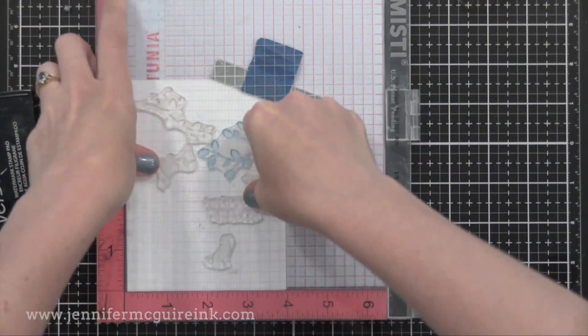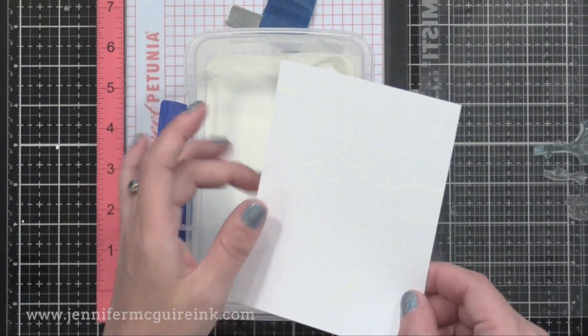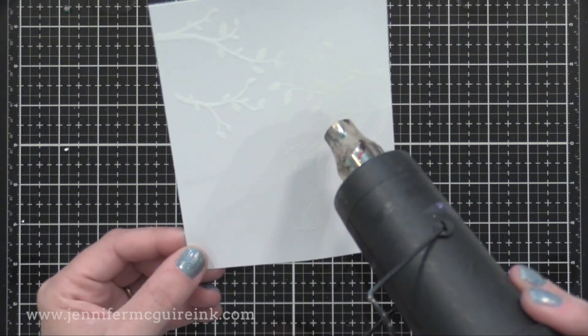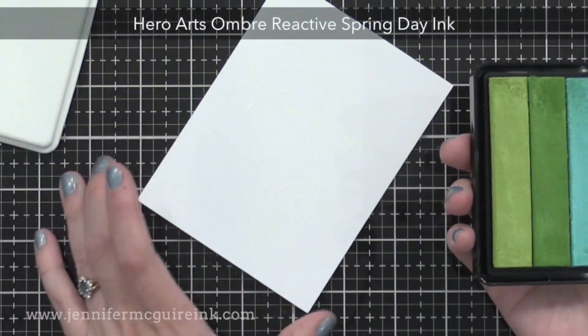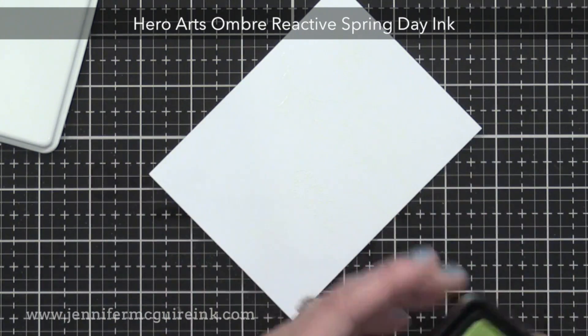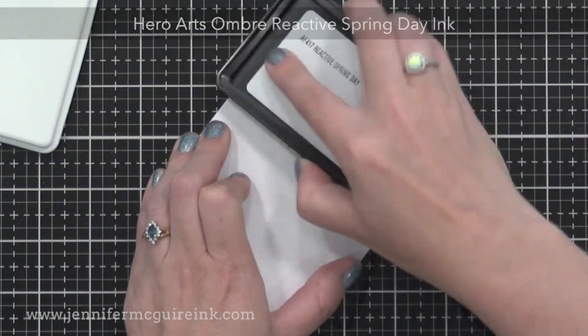You could use any color you want. However, I think white embossing powder looks the most striking when you apply color over it. After I've heat set this completely, you can apply pretty much any inks on top here. You can use dye ink, pigment ink, watercolor. But what I'm using is Hero Arts Ombre Reactive Spring Day ink.